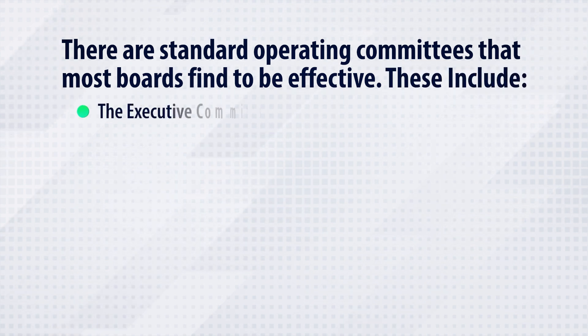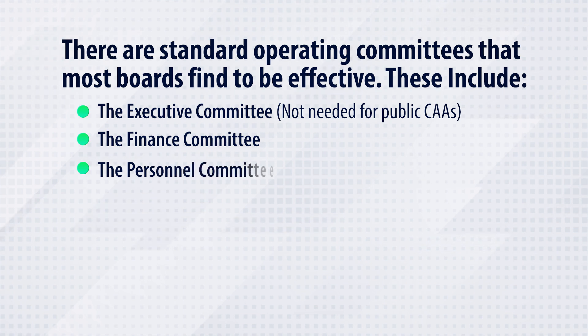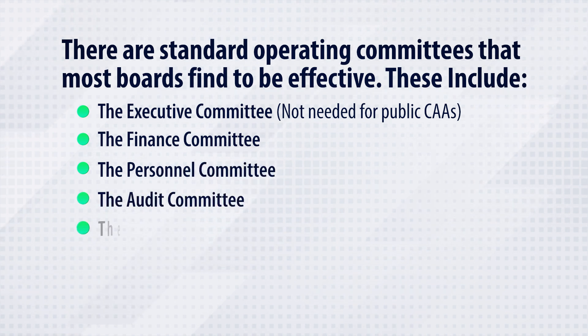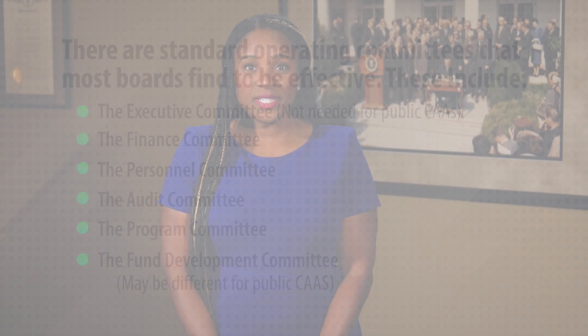There are standard operating committees that most boards find to be most effective. These include the executive committee (not needed for public CAAs), the finance committee, the personnel committee, the audit committee, the program committee, and the fund development committee — which may differ for public CAAs. These committees should be established in the organization bylaws and included in its board operation and policy handbook. Ad hoc committees can be formed for a limited time period to address a specific need or issue. When the work of the ad hoc committee is complete, the committee is dissolved.